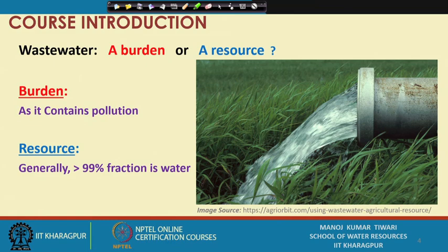Since the water is generally not usable in its original state, it becomes a burden because you have to find a place to dispose it. It contains a lot of pollutants, and disposing it to a natural system has its own demerits and environmental issues. We know that the pollution in our major waterways, rivers, Ganga, Yamuna, is primarily because of wastewater disposal. If we cannot use it in its original state and have to dispose it, it really becomes a big burden to dispose it in a sustainable manner.